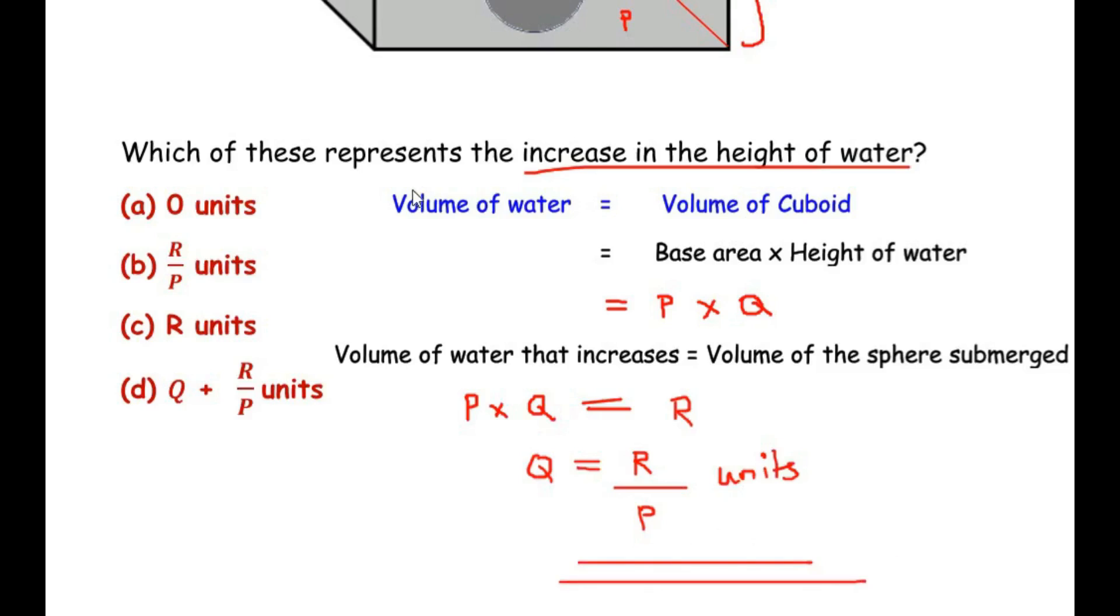So let us see if it is in the option. It is option B, R over P units.